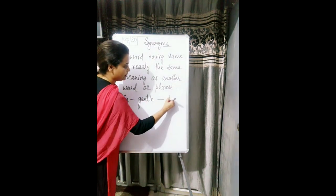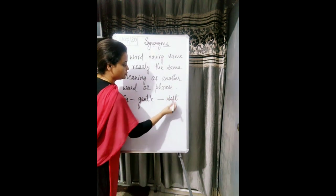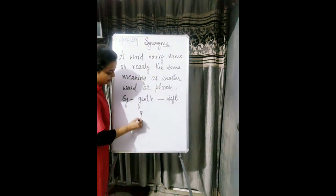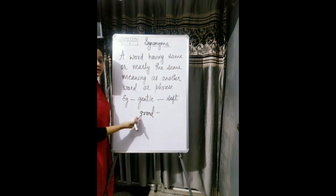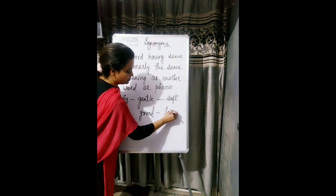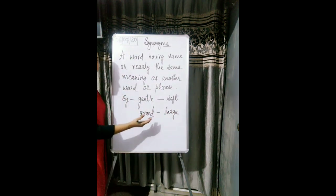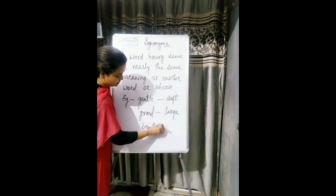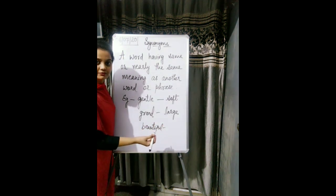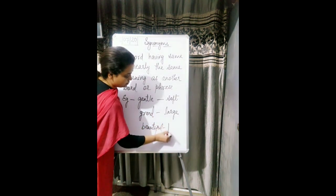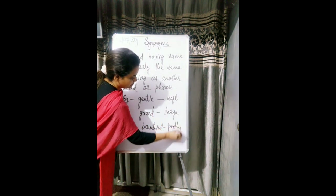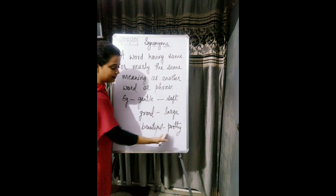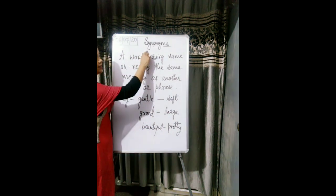So you can say soft also, right? Soft and gentle both have the same meaning. For example, grand — either you can say grand or you can say large, both have nearly the same meaning. Then you can say beautiful; sometimes we say pretty when we like something instead of saying beautiful. So these are some examples of synonyms — words having the same or nearly the same meaning.